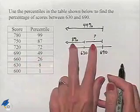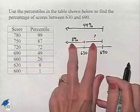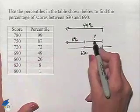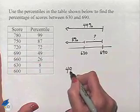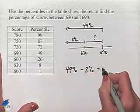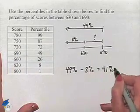Notice that if we add these two percentiles together, we'll end up with 49%. So therefore, to find the unknown, we're going to take 49% and subtract 8% from it in order to come up with our answer, which will be 41%.